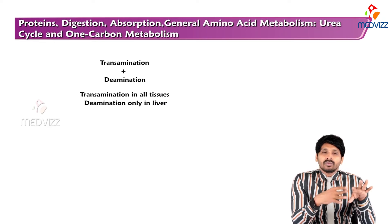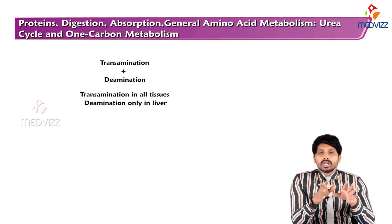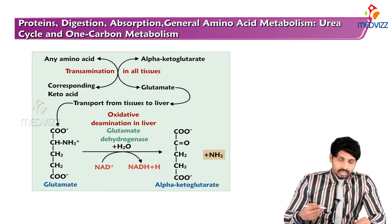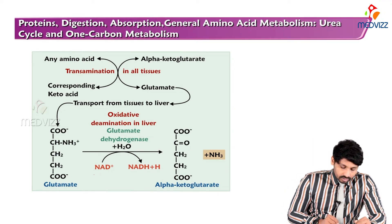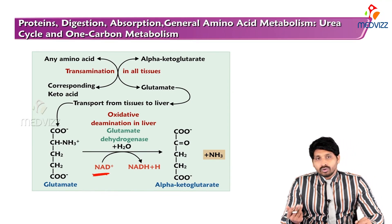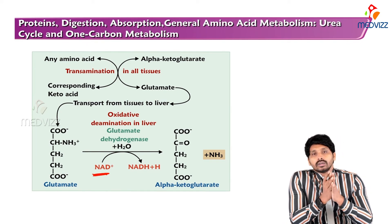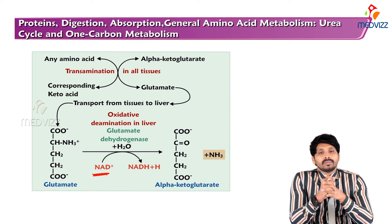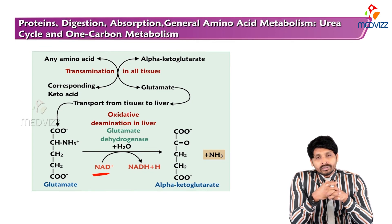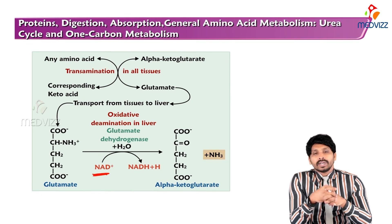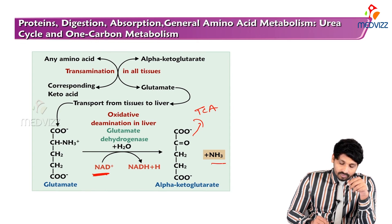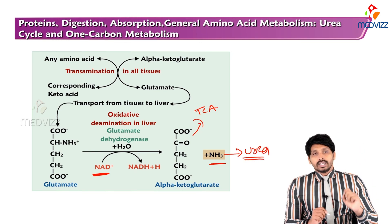The removed amino group is involved in making urea, a soluble product easily excreted in urine. The enzyme playing the major role in deamination is glutamate dehydrogenase. Reducing equivalents are released from glutamic acid to form alpha-ketoglutarate. All removed amino groups are concentrated, converted into glutamate, and reach the liver where glutamate dehydrogenase converts them to alpha-ketoglutarate, which can enter the TCA cycle. The removed amino group is used for urea production.